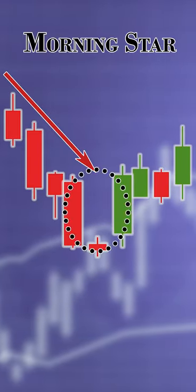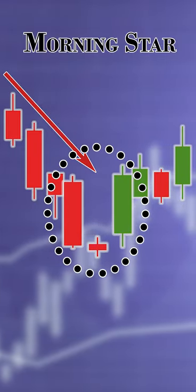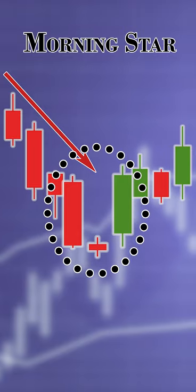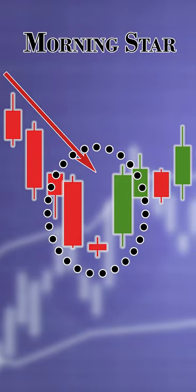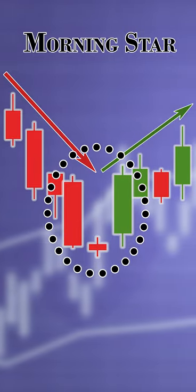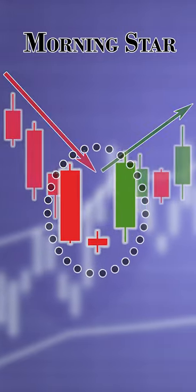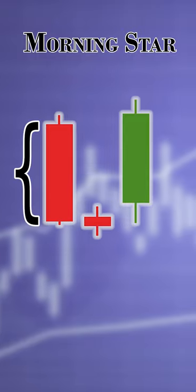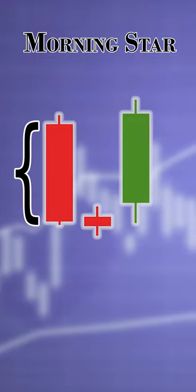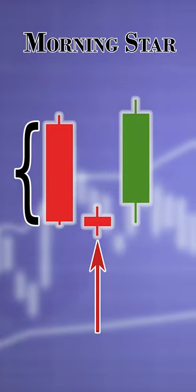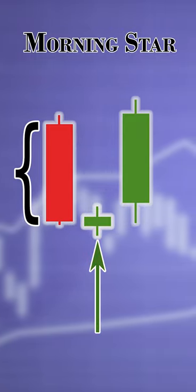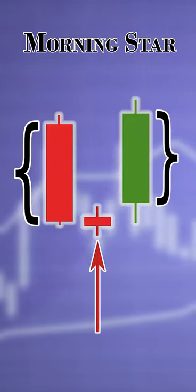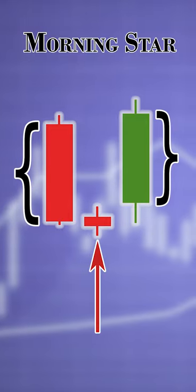During a downtrend, the formation of a morning star at the bottom suggests a potential bullish overtake. It involves three candlesticks: a long red on the left, a very short red or green in the middle, and a long green on the right.